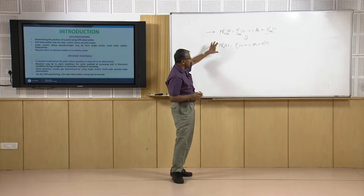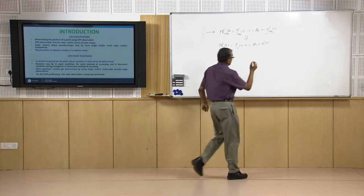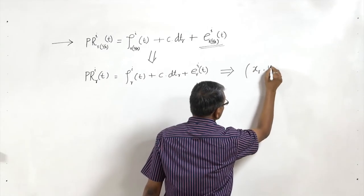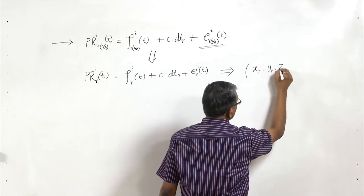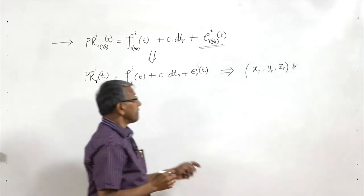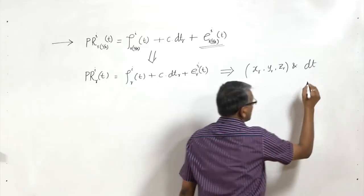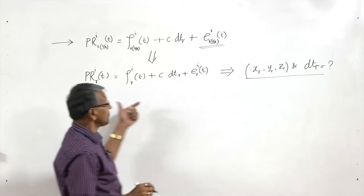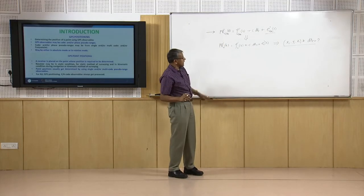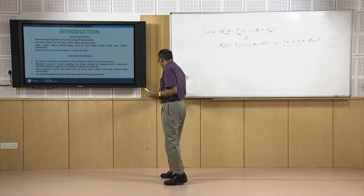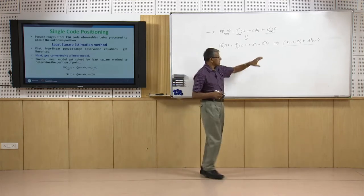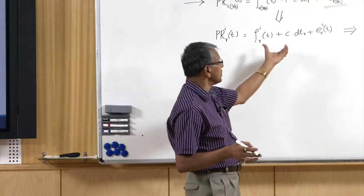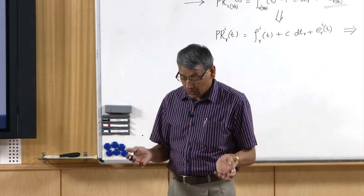This observable has to be processed to determine the position of the receiver. Let us say the position of the receiver is XR, YR, ZR, and the error in receiver clock is DTR. These are the four unknowns which we need to determine by processing code pseudorange observables. There are different methods by which this can be processed; the least squares estimation method is one of the methods which we will apply to show how this leads to GPS position.